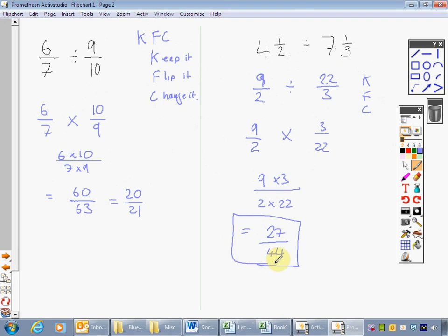I hope that's helpful to you. Very quick summary. If you're multiplying fractions, you're times the tops, you're times the bottoms. If you're dividing fractions, you KFC it. Keep it. Flip it. Change it. And then treat it as a normal multiplication. Good luck with those questions.